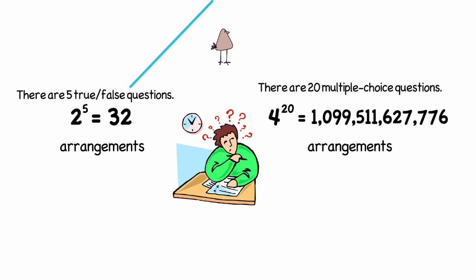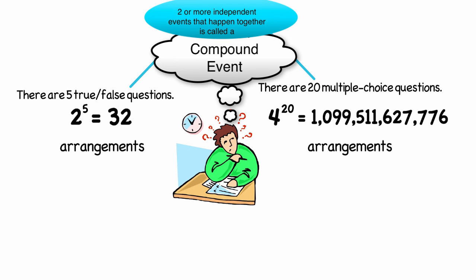Well, the true-false section and the multiple-choice section are independent events. By which I mean, results from the true-false section does not affect what I do on the multiple-choice section. When there are two or more independent events that happen together, it's called a compound event.